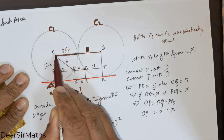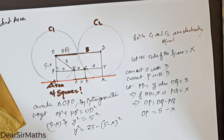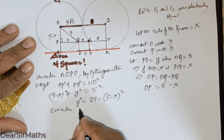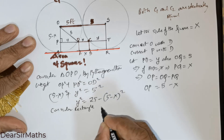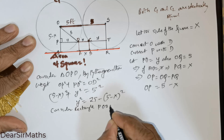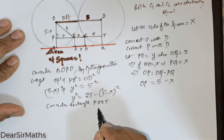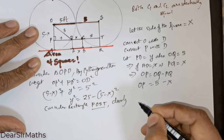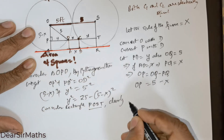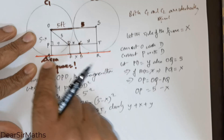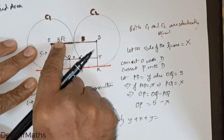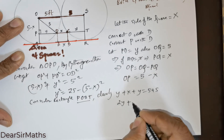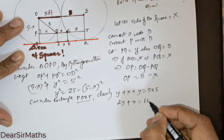Consider the rectangle POST. It is beautifully formed. Clearly, Y plus X plus Y — this entire length — equals 5 plus 5. So we get 2Y + X = 10.